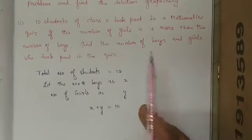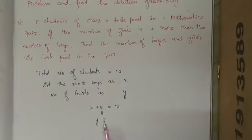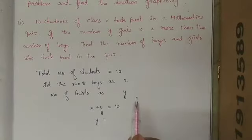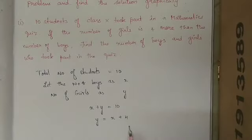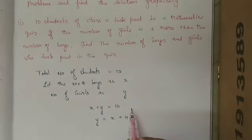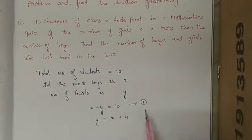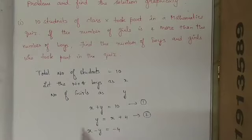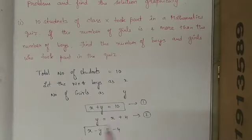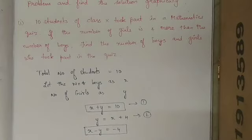The number of girls y is 4 more than the boys. More means plus. So y is equal to x plus 4. This is our second equation. Now let us rewrite the second equation: bring the y to the left side, giving x minus y is equal to minus 4. So the first equation is x plus y equals 10, and the second equation is x minus y equals minus 4.